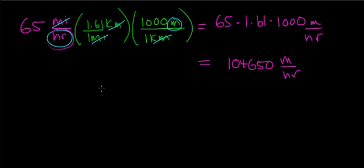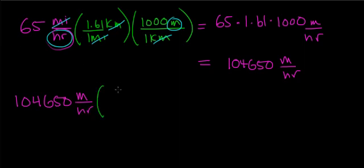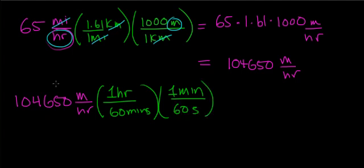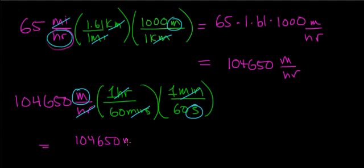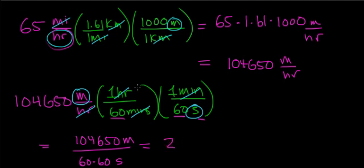The next step is to convert hours over to seconds. Starting with 104,650 meters per hour, I know one hour has 60 minutes, and one minute has 60 seconds. The units of hours cancel, then the units of minutes cancel, and I'm left with meters per second. So I divide 104,650 by 60 times 60 seconds, which works out to approximately 29.1 meters per second.